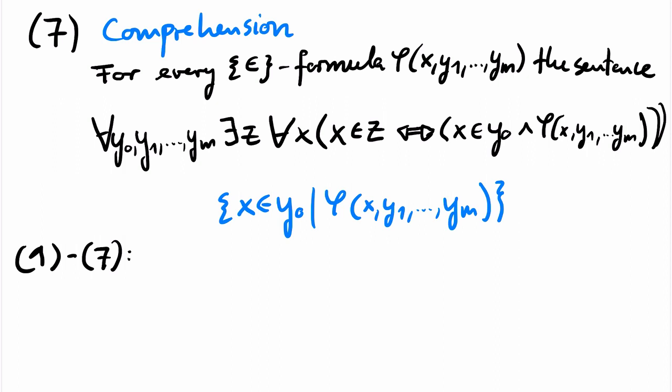The axioms we have seen so far are called Zermelo set theory, abbreviated just by Z.